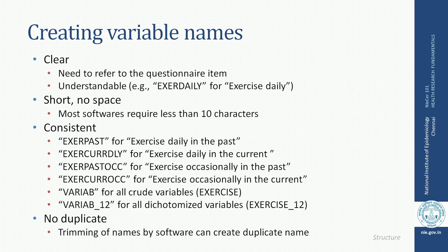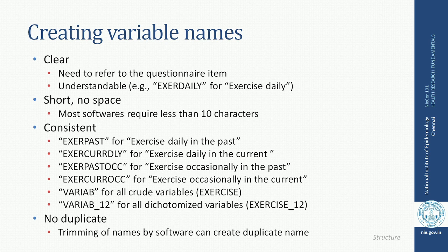The third important aspect is be consistent. For example, for different types of response to a question on how frequently somebody exercises, exercising daily in the past can be denoted by EXERPAST — exercise past — that is clearly self-explanatory about that particular questionnaire item. If it is currently daily, it is coded accordingly. If it is past occasionally, those words are given in the variable name, so that by looking at the variable name, the investigator can easily identify which questionnaire item it refers to.